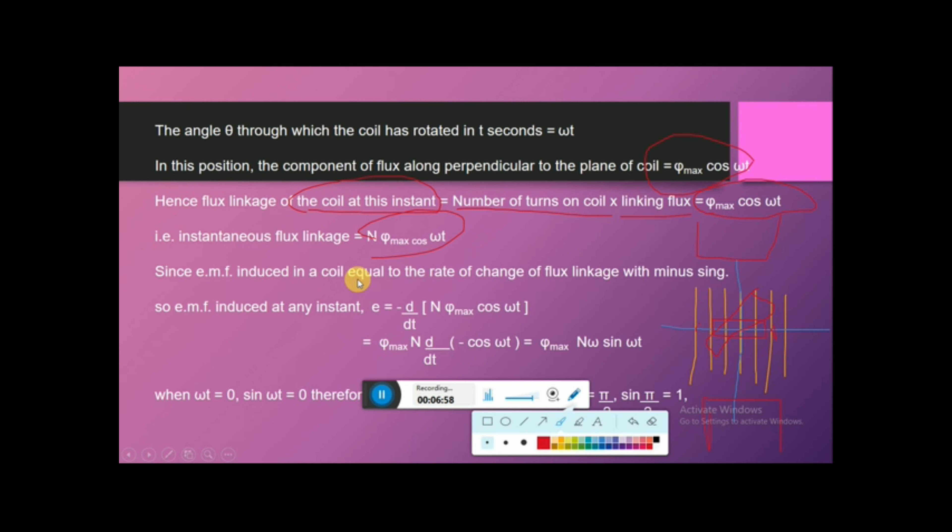Since EMF induced in coil equals the rate of change of flux linkage with minus sign, self-induced EMF at an instant is E equals minus d/dt times N phi maximum cos omega t. This gives phi maximum N omega sin omega t.